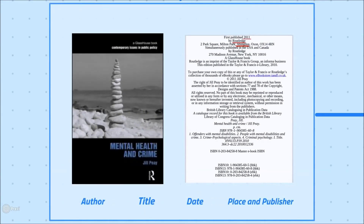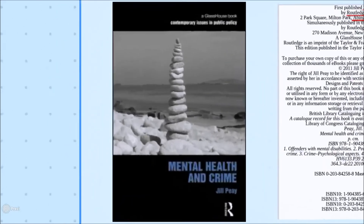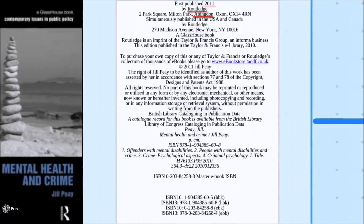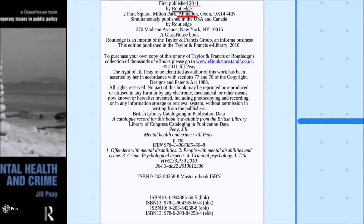For this book, Mental Health and Crime, the author's full name and title are clearly on the front. However, on this page there is a lot of information and you need to extract just three things.